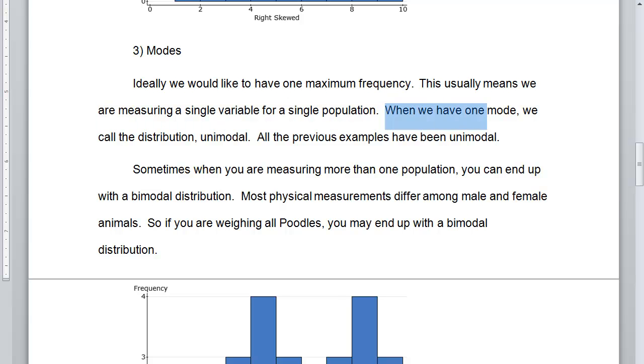So when we have one mode, we call the distribution unimodal. All the previous examples, these have been unimodal.